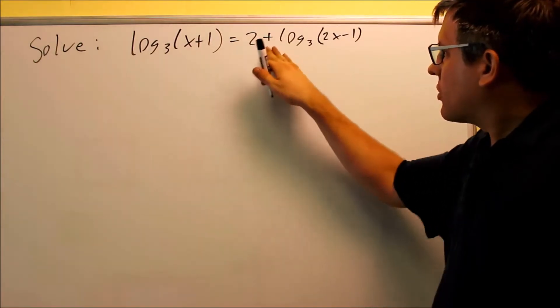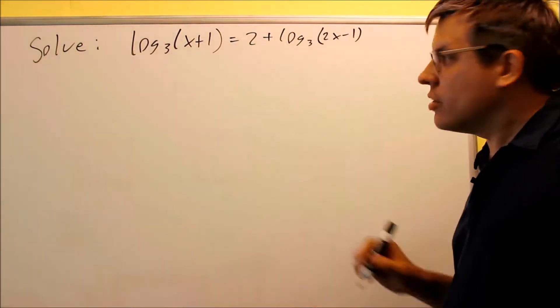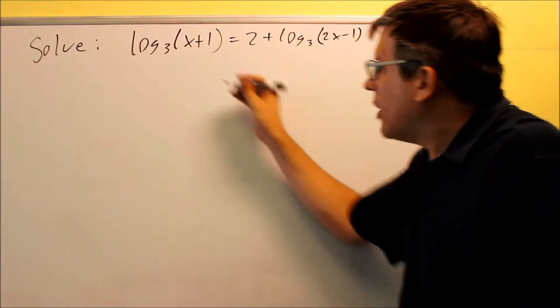We're solving another one. We have a plus sign right here, so what we need to do is we need to get all the logs on one side of the equation. So we're going to move this log across the equal sign. It's going to change and become negative.